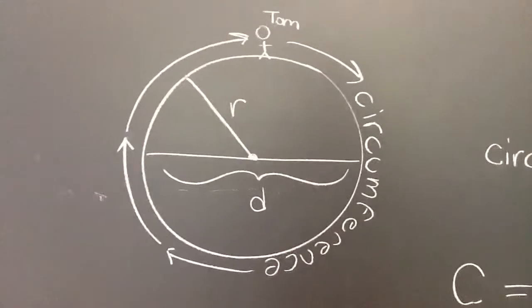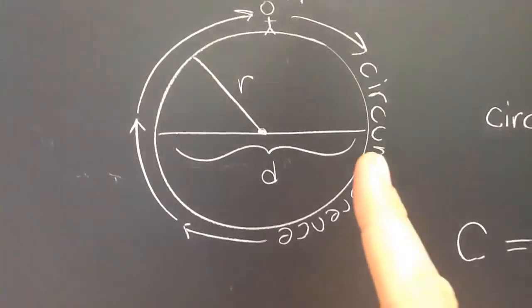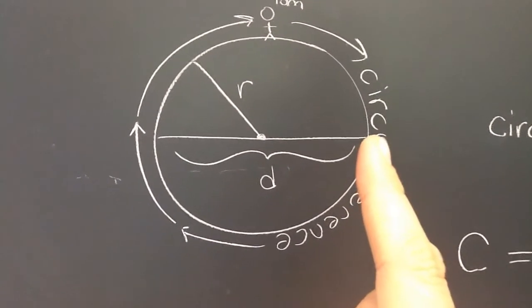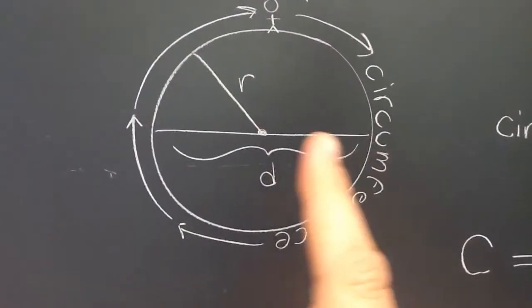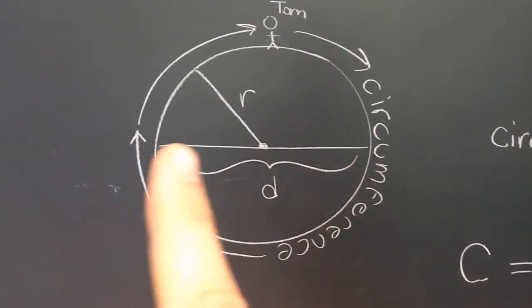The diameter of a circle is a segment that runs from one point on the circle to another point, but it must run through the center. And that's called the diameter.